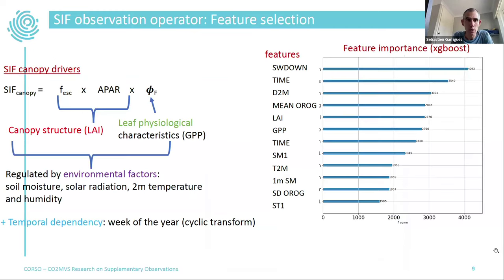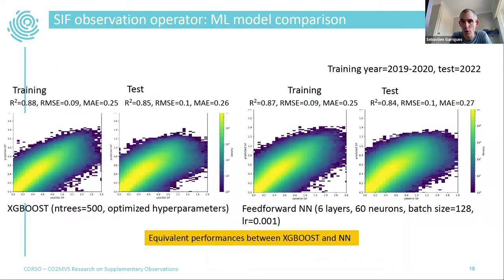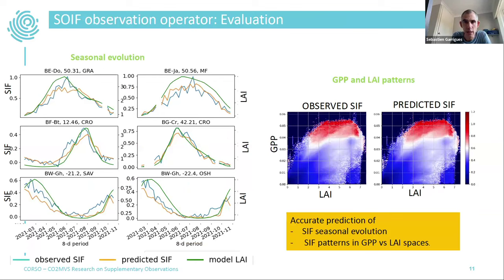We applied feature selection based on process-based knowledge of SIF and machine learning ranking. We also compared XGBoost and feed-forward neural networks and found a similar level of prediction accuracy. We chose XGBoost for SIF because it was easier to implement in the IFS.